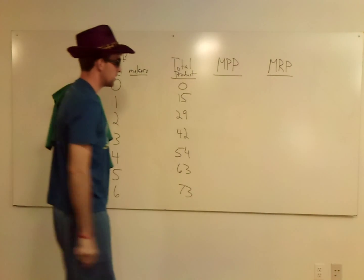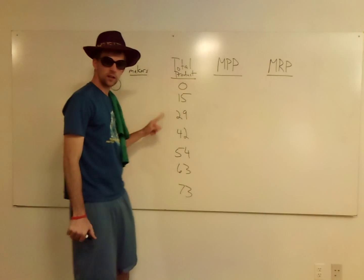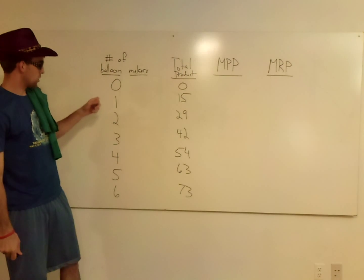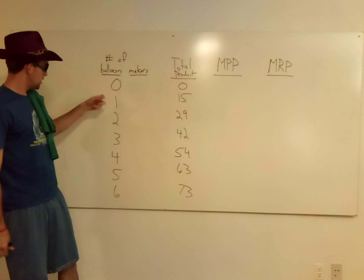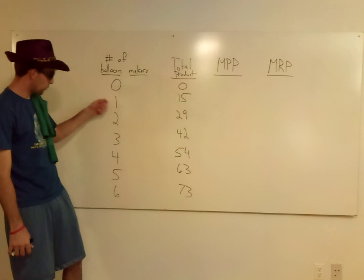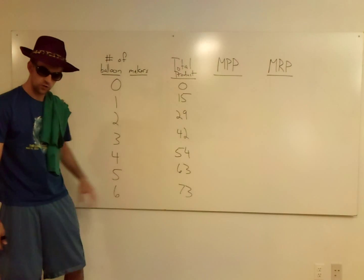All right, that's enough. So the total product. This is what the combinations of these workers can do if they combine their workers. So the first worker, he can make 15. The first and the second worker, they make 29, 1, 2, 3, 42, so on and so forth.